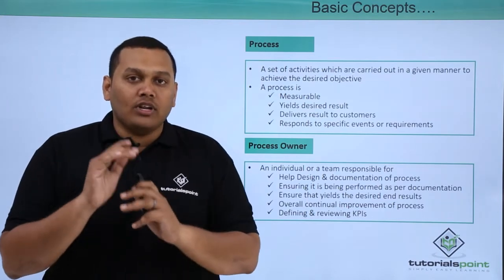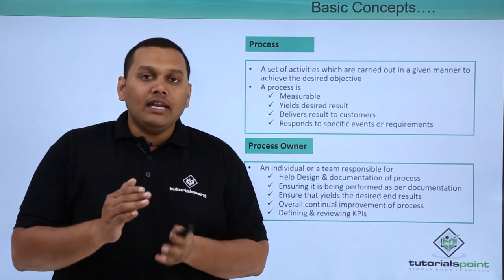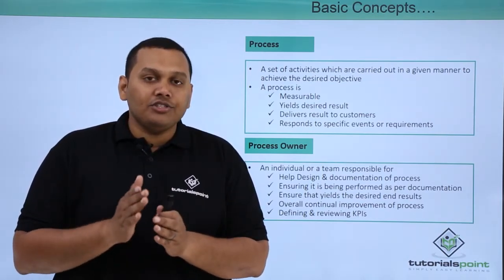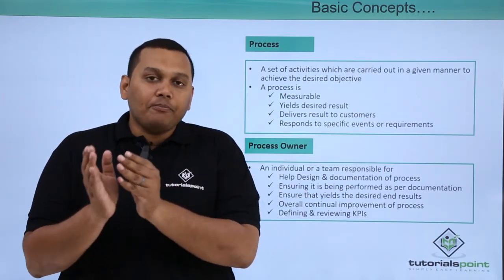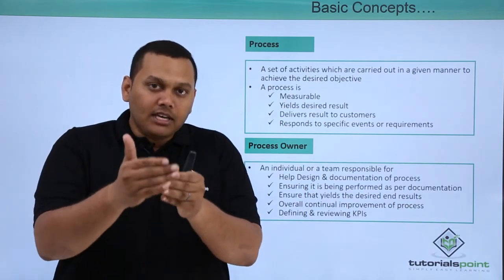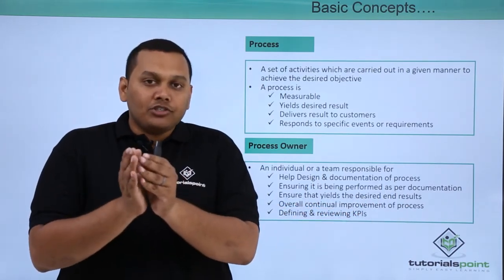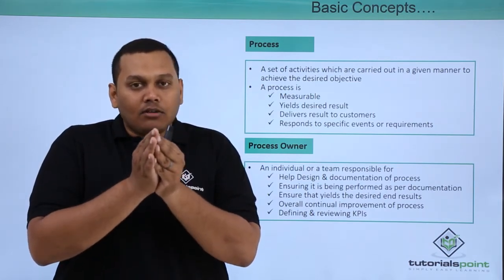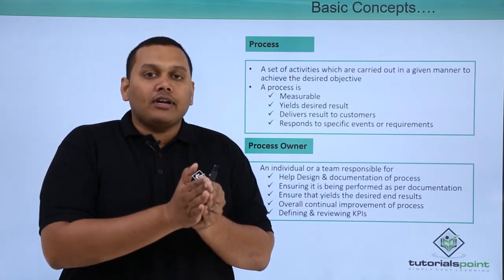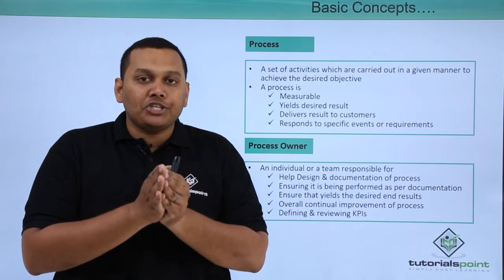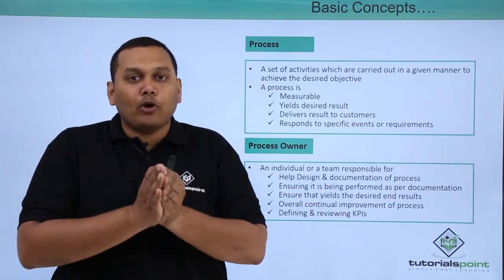The process owner is an individual or a team responsible for helping in the design and documentation of processes. This team will edit, amend, or re-edit the present process to get the desired result. They ensure the process is performed as per documentation, and that it yields the desired end results. If end results are not matching, processes can be amended any number of times. This team is also responsible for continual improvement of the process, day-to-day activities, documentation review, and defining and reviewing KPIs — measuring via tools to judge whether the processes are correct.